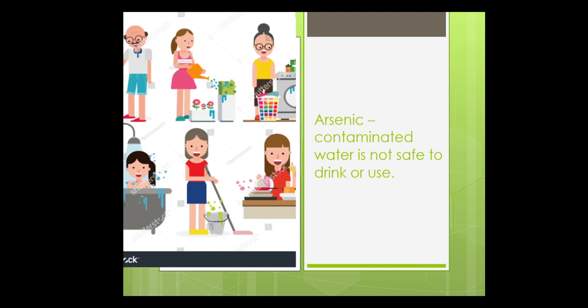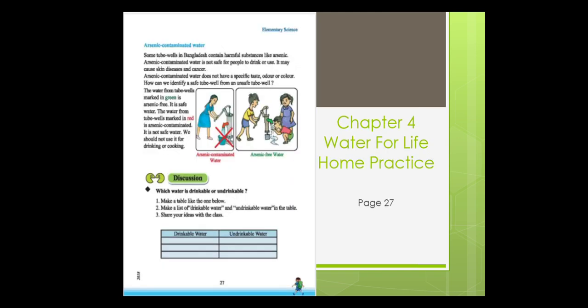So students, I hope you have understood what arsenic is and what arsenic-contaminated water is. You also learned that not all fresh water is safe to drink. Now you will do this feedback from your book, page 27: write the names of three drinkable water sources and undrinkable water sources. Stay home, stay safe. Thank you.